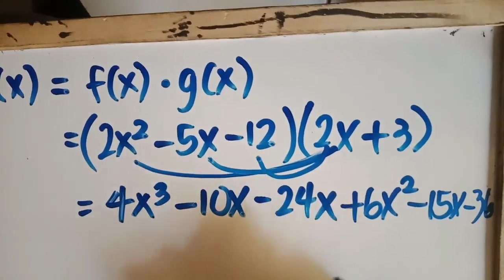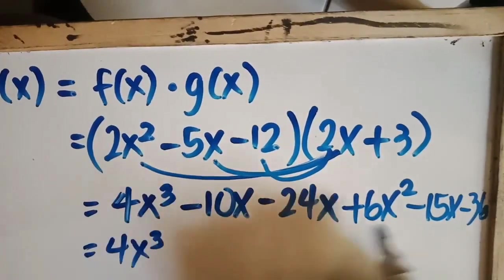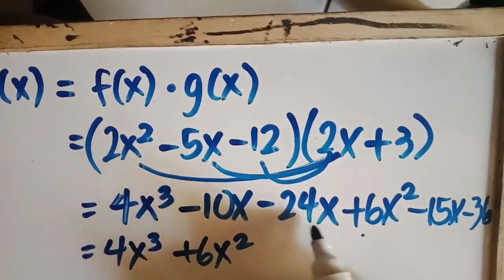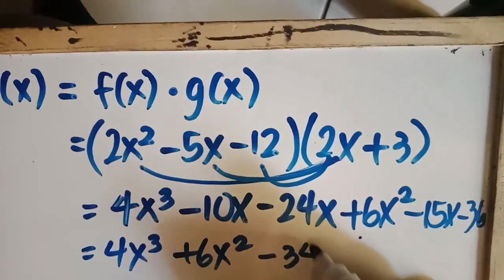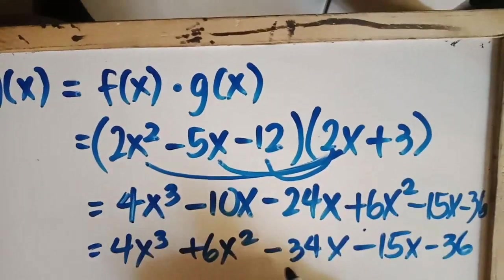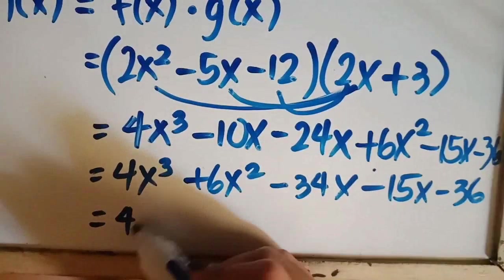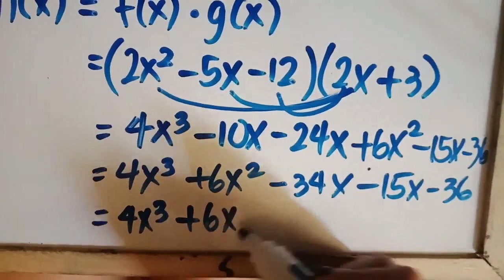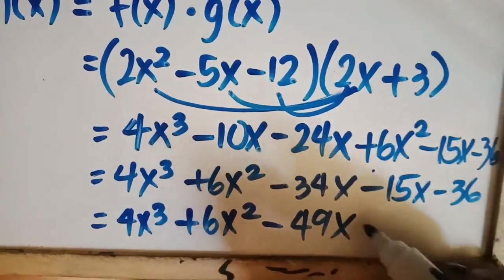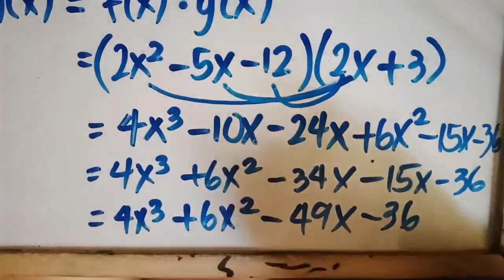Now combine similar terms. We have 4x cubed plus 6x squared, negative 10x squared minus 24x minus 15x minus 36. Now as you can see, we still have common terms. So let's proceed. We have 4x cubed plus 6x squared minus 49x minus 36. And as you can see, we don't have common terms, so this is the final answer.